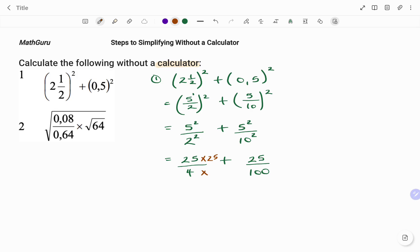I'm going to make my left-hand side also 100 by multiplying at the top by 25. And when you're working with fractions, equivalent fractions, whatever you do at the top, you do at the bottom. So that becomes 25 times 25, 625, divided by 4 times 25, 100,